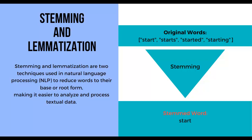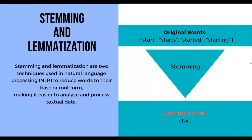As you can see in this example on the right side, in the case of start, starts, started, and starting, the stem or root form is start. So after stemming, all these words would be reduced to the common root: start. This process helps in simplifying the analysis of text data by treating variations of a word as the same word, thereby improving the efficiency of algorithms and the text processing task.